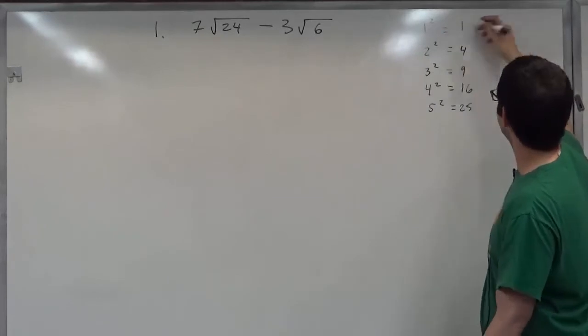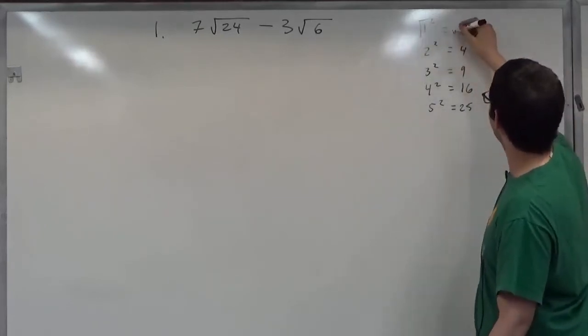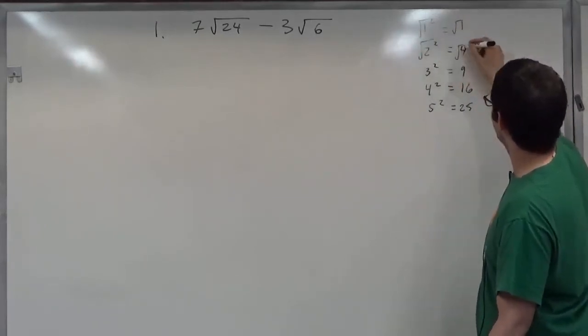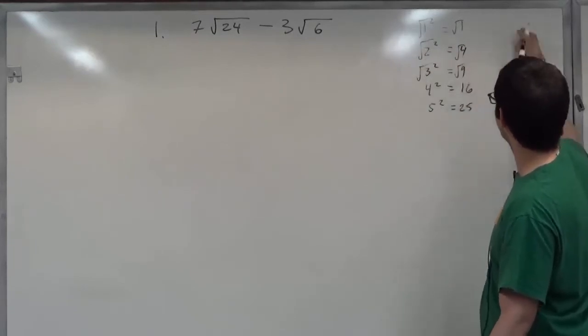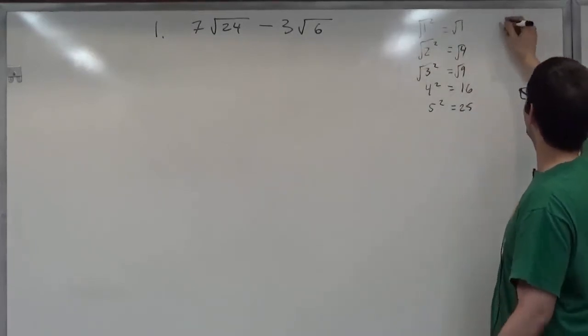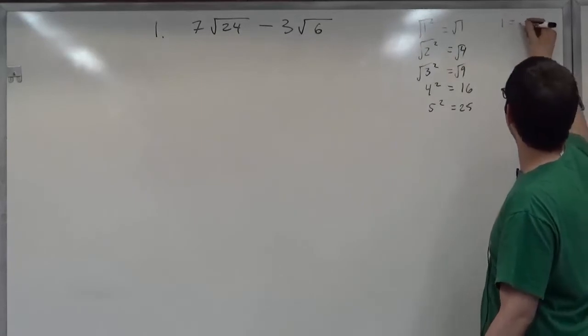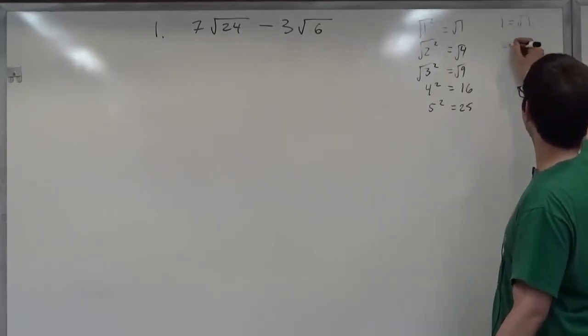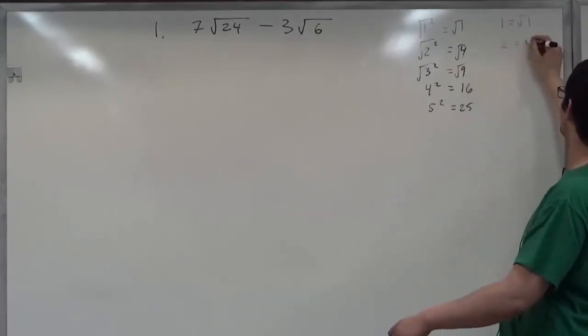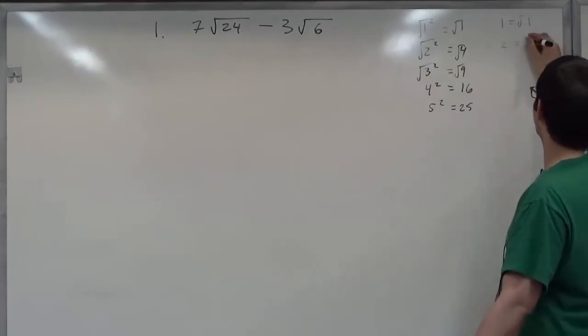Now it's good to know that the square root follows through. In other words, starting from the first one, one equals the square root of one, two equals the square root of four.